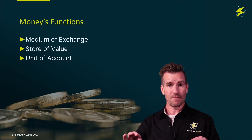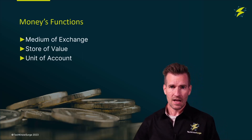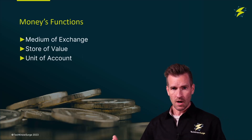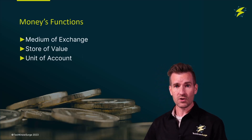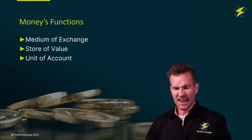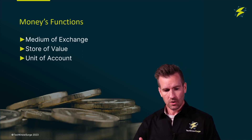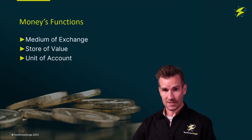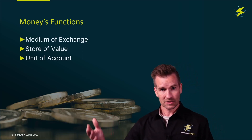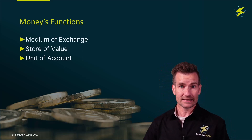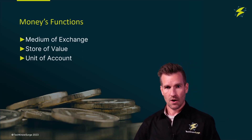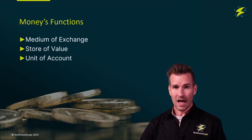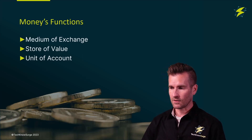The final function money sets out to accomplish is unit of account. Think of this as the measuring stick — we measure against it. We measure how successful stocks, index funds, or whatever it is based off of money. Even cryptocurrency: when we look at cryptocurrency, we measure it against other forms of cryptocurrency or dollars or yen, whatever the currency is in your area. So we measure Bitcoin and different altcoins off of US dollars — that's a unit of measurement or unit of account.